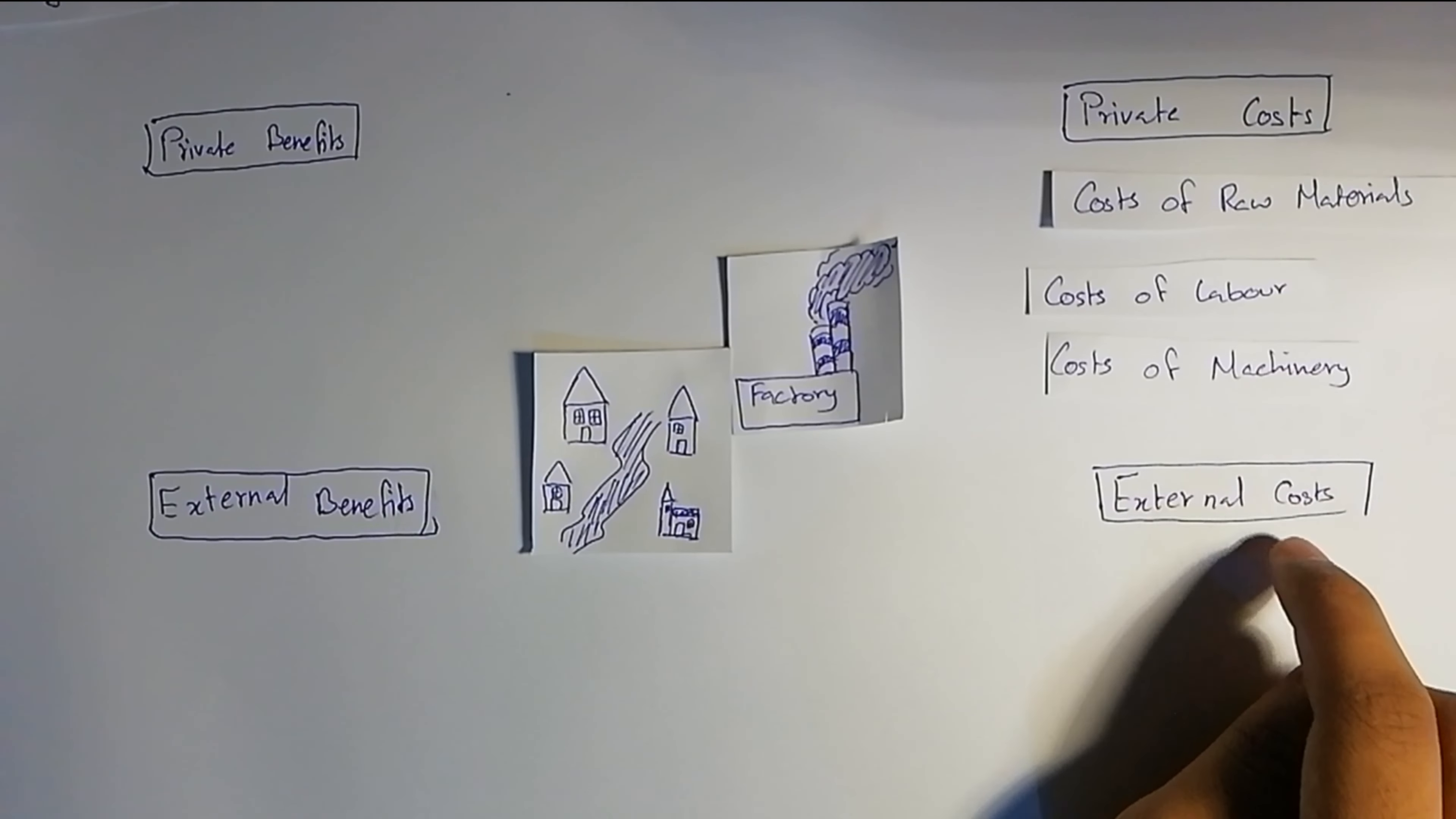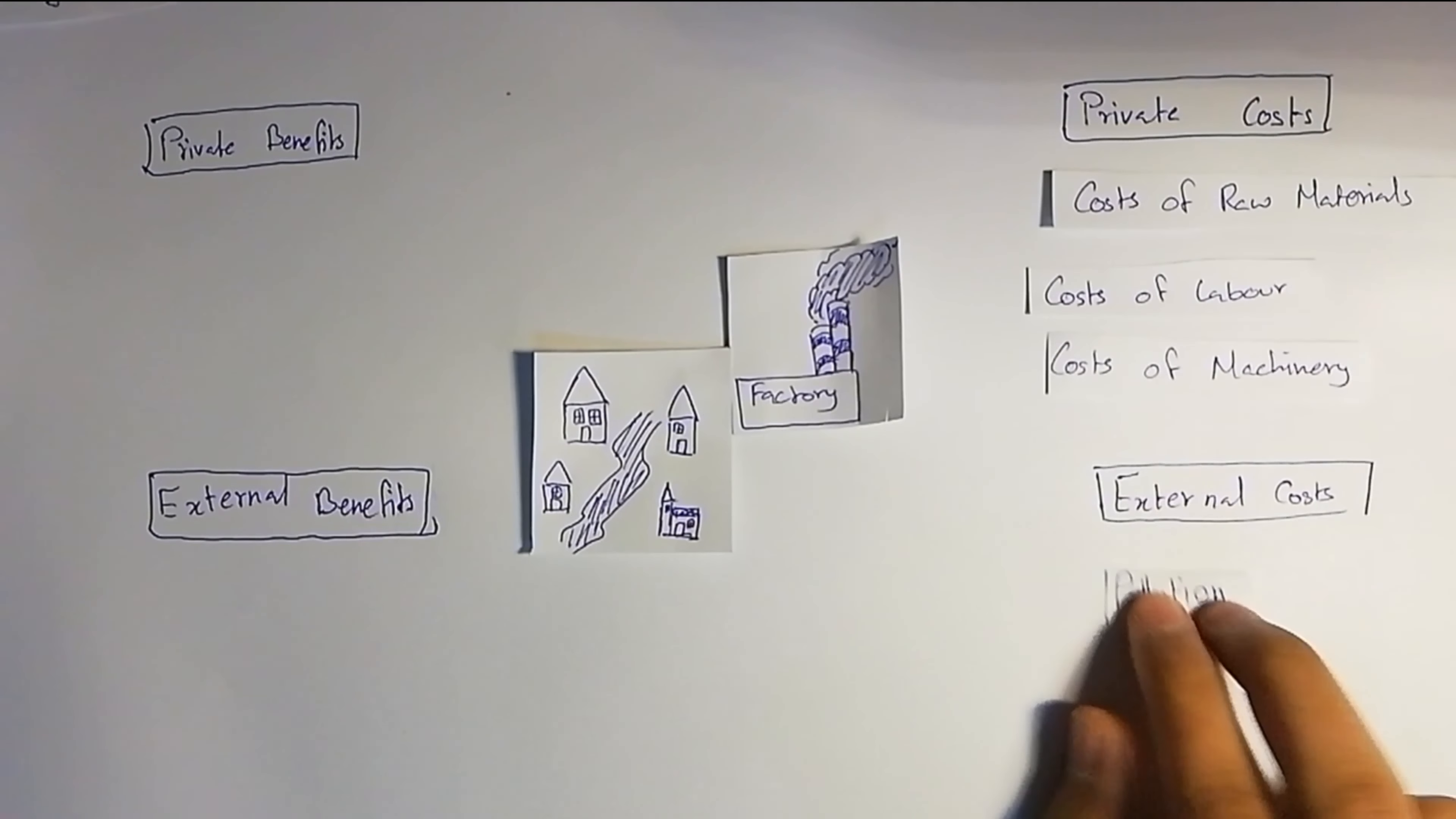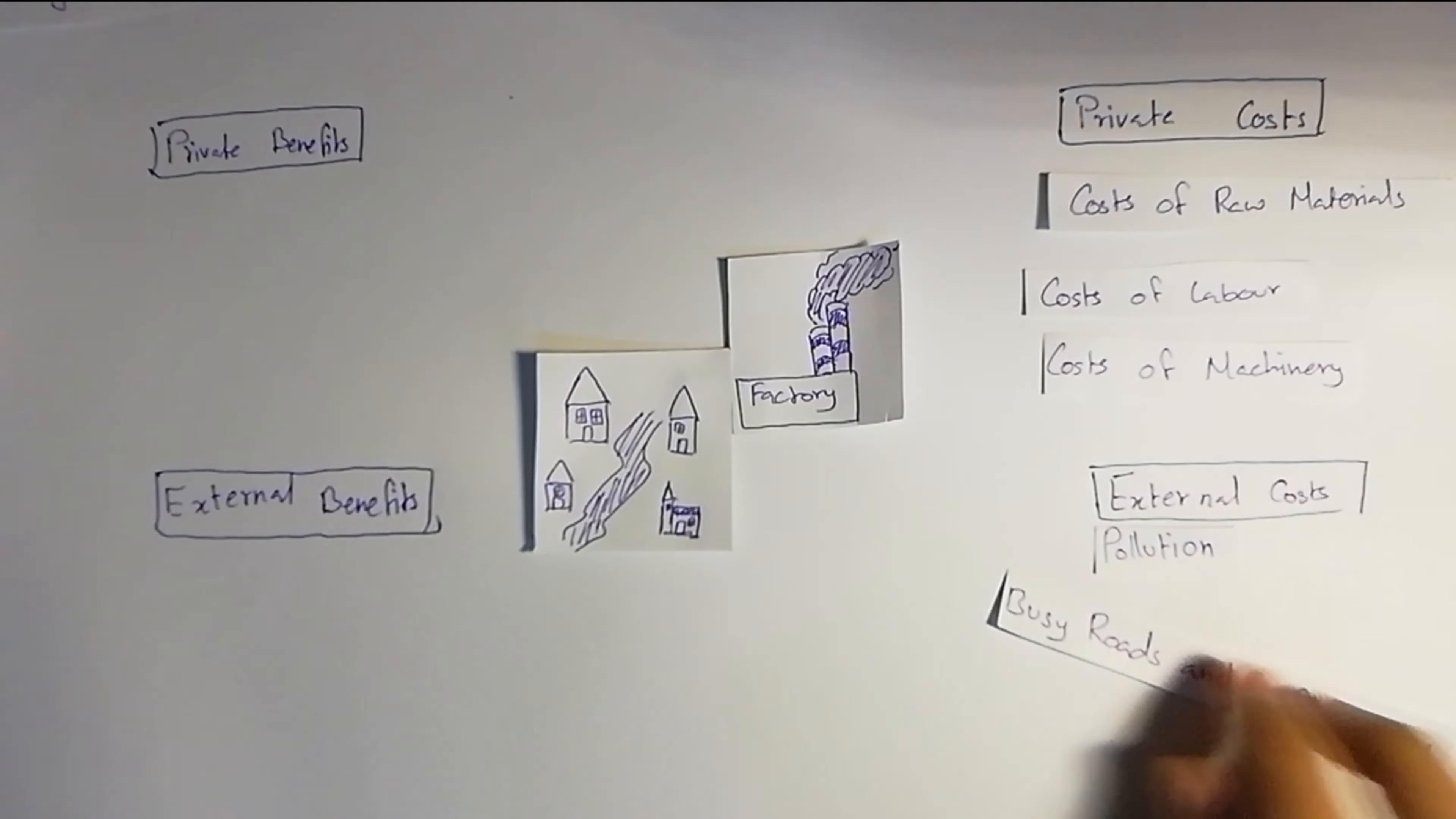What else? External costs. These are the negative side effects of production and consumption of a product which are incurred by third parties who are not involved in the process and for which no compensation is paid. So here we have pollution from the factory: air pollution and water pollution.